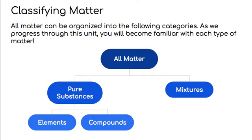So we look at the top, this graphic organizer is breaking down all matter. So if it's matter, it falls somewhere in this organizer. So all matter in the universe can be first broken down into two distinct categories, pure substances and mixtures.